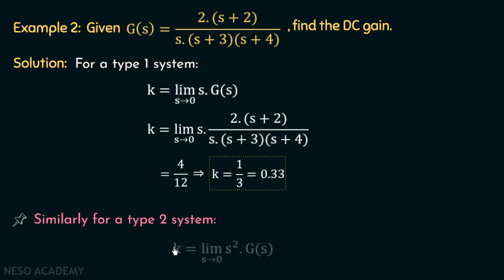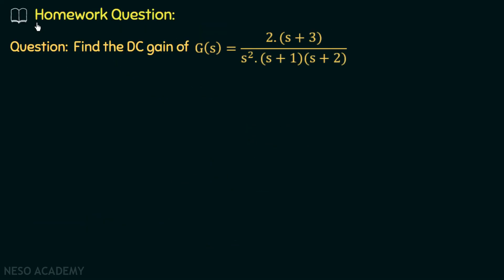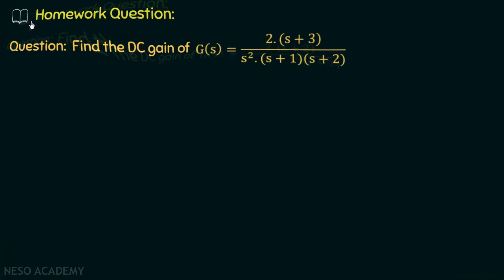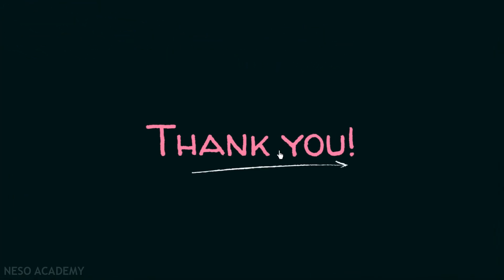For a type 2 system, we can have the DC gain k equal to the limit as s tends to 0 of s squared multiplied with G(s). In a type 2 system, there will be two poles at the origin, and this s squared in the numerator will cancel the effect of those two poles, allowing us to apply the limit. I will give you a homework problem based on this expression — try it and post your answers in the comment section. We will discuss more problems based on DC gain in the upcoming lectures. I will end this lecture here; see you in the next one.